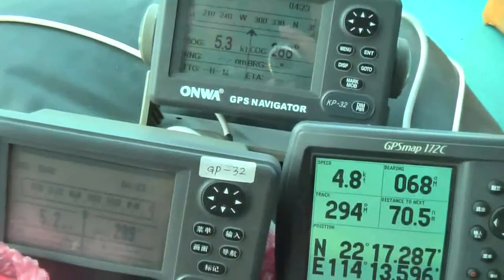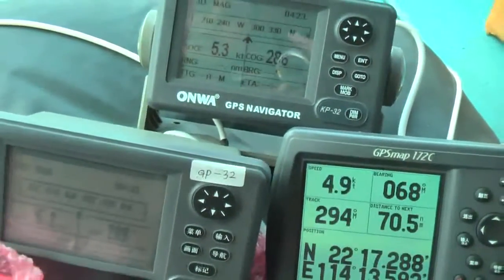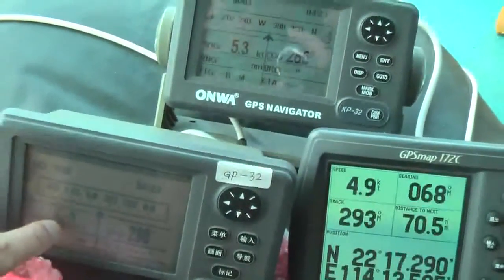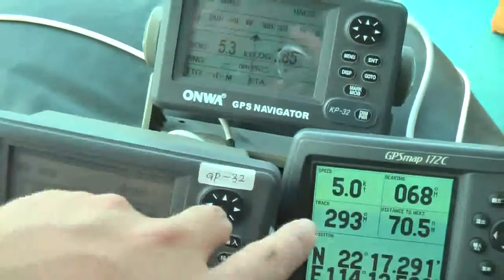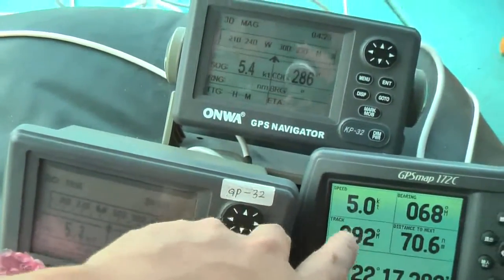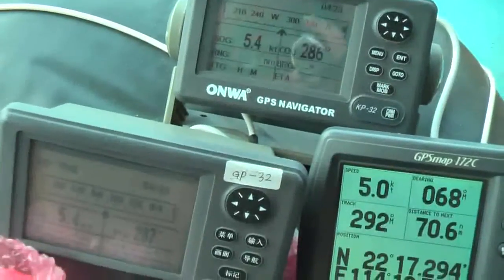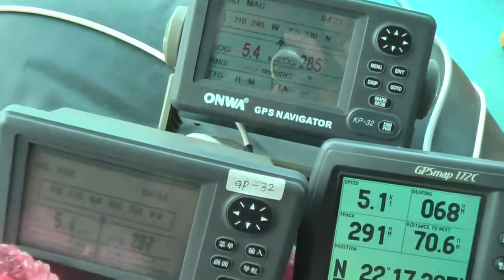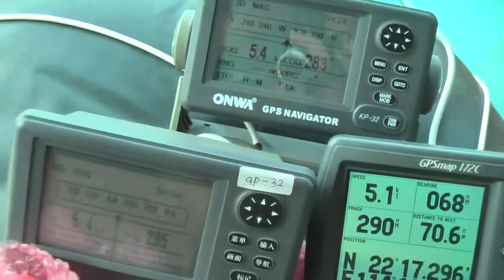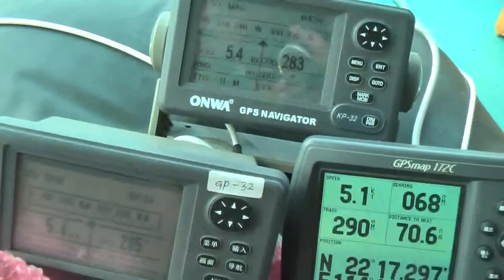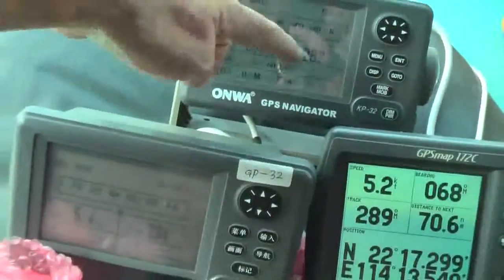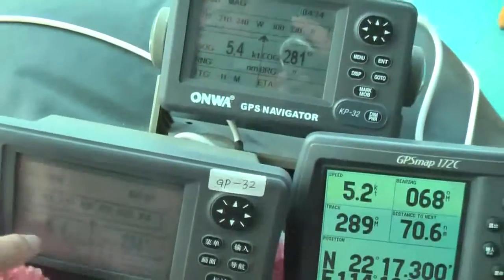Now we are increasing the speed to 5.3 knots, 5.2, 5.3 knots, but it seems GAMI is quite slow to catch up. Now we are going steadily at the speed of 5.4 knots. You can see that the heading and the speed is quite stable.